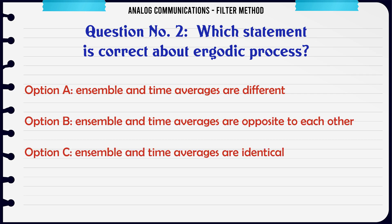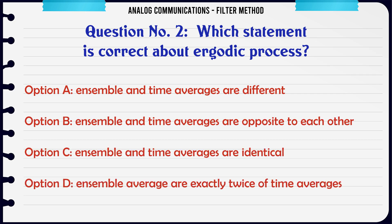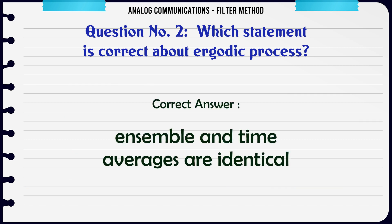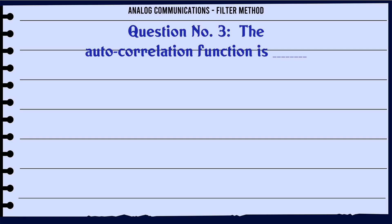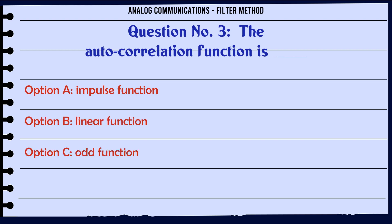Which statement is correct about an ergodic process? a) Ensemble and time averages are different. b) Ensemble and time averages are opposite to each other. c) Ensemble and time averages are identical. d) Ensemble average is exactly twice the time average. The correct answer is: Ensemble and time averages are identical.